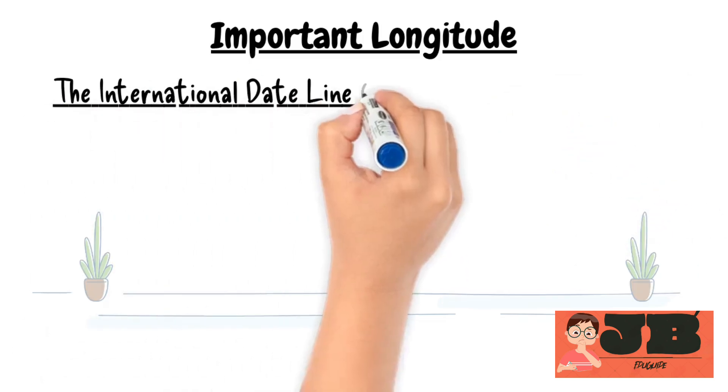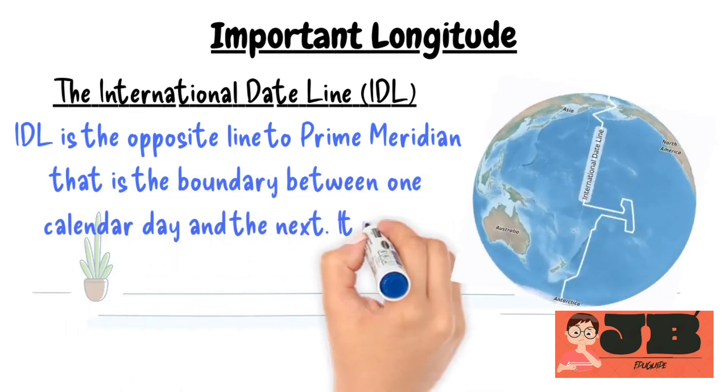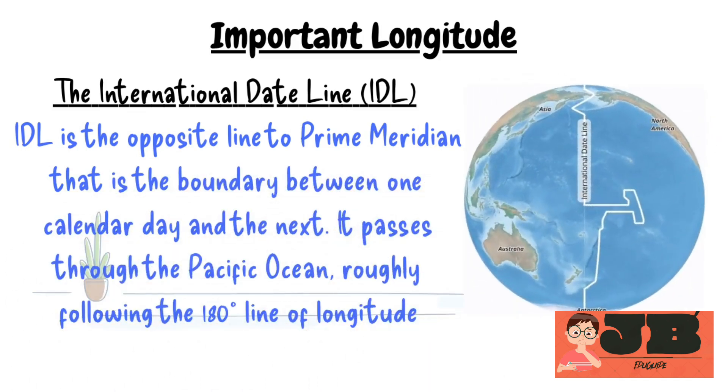Come to second, the international date line, IDL, is the line opposite to the prime meridian, is the boundary between one calendar day and the next. It passes through the pacific ocean, roughly following the 180 degrees line of longitude.